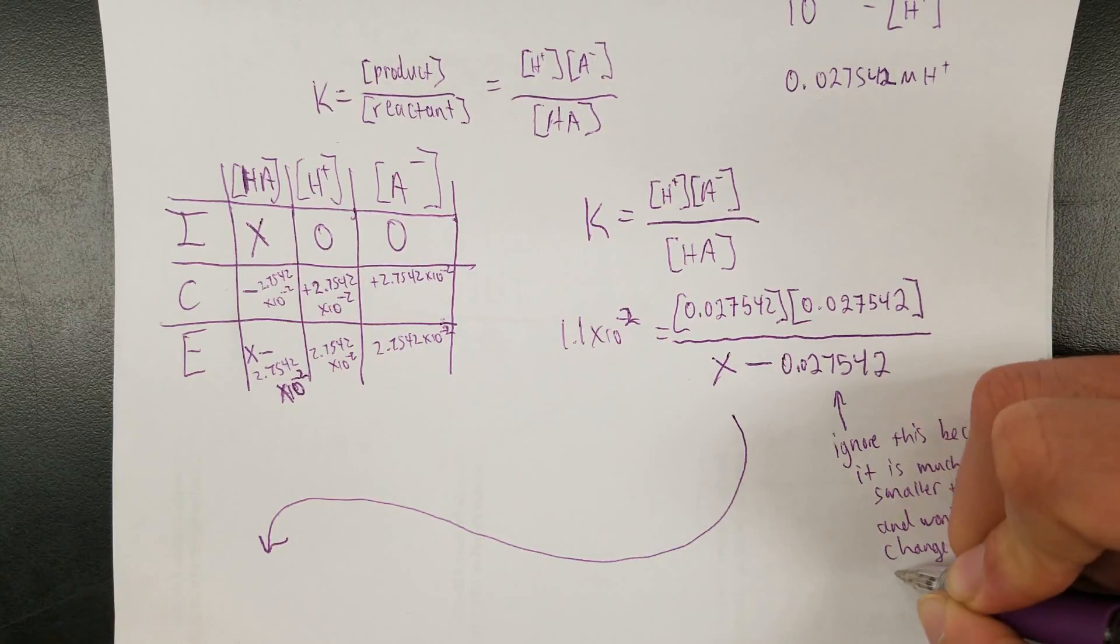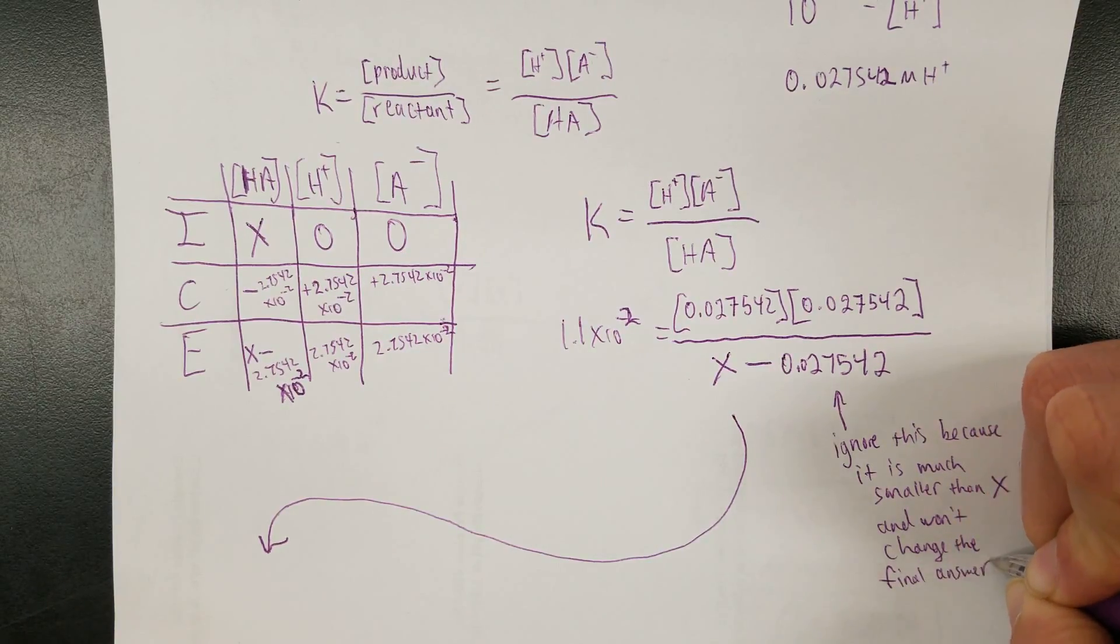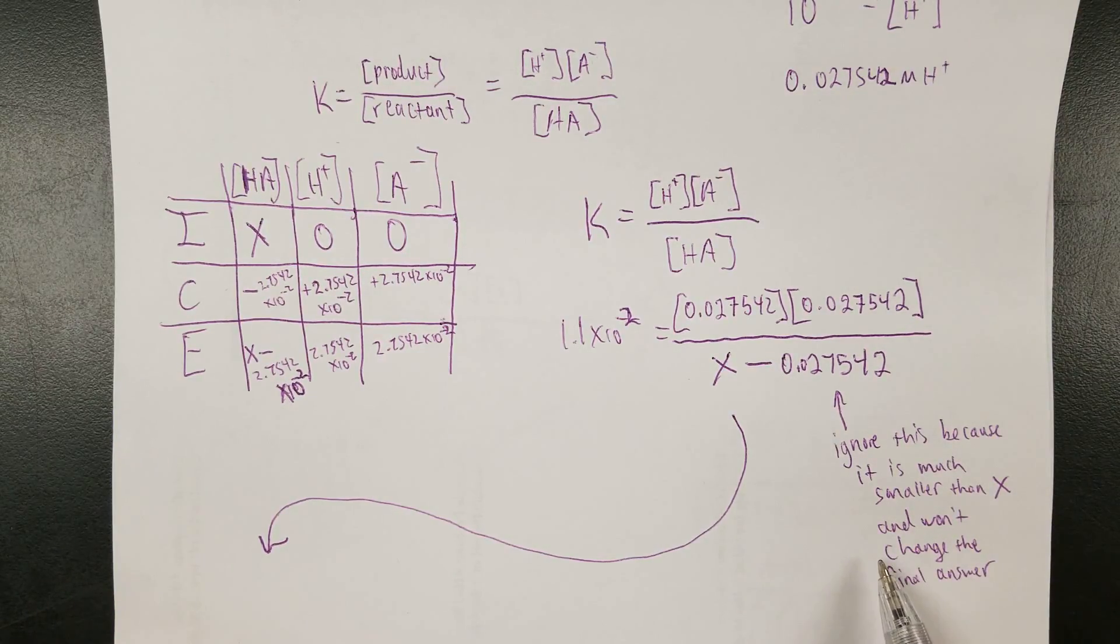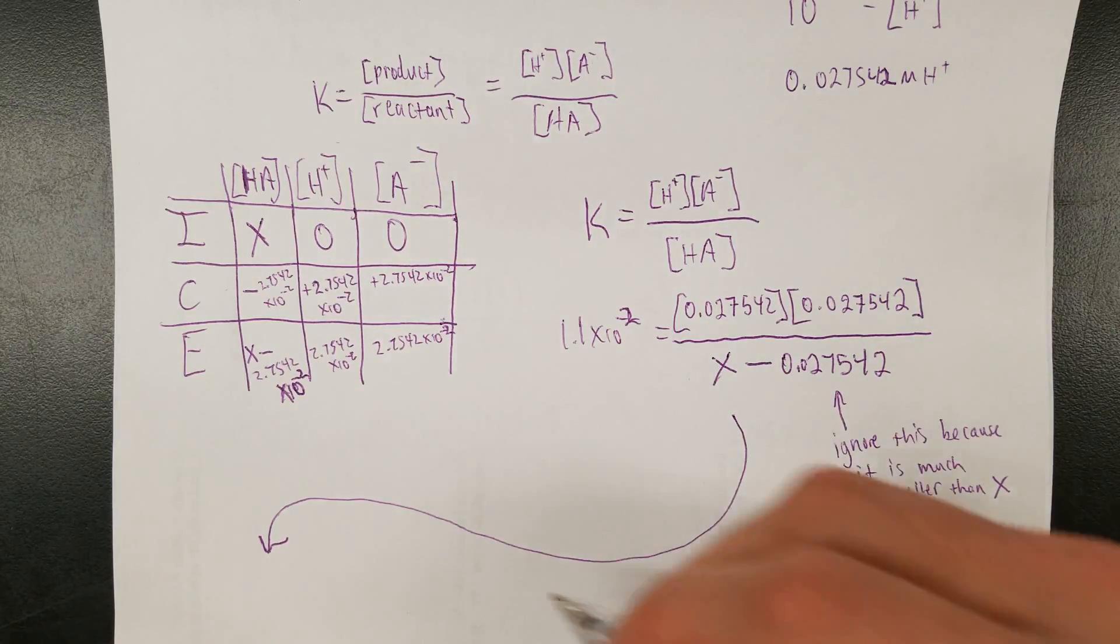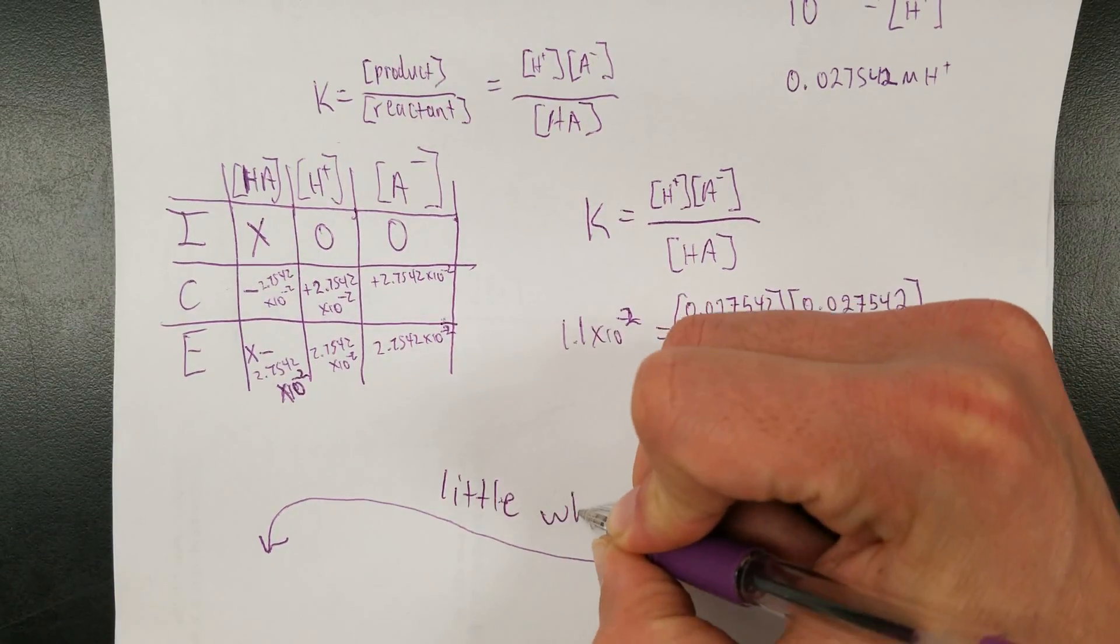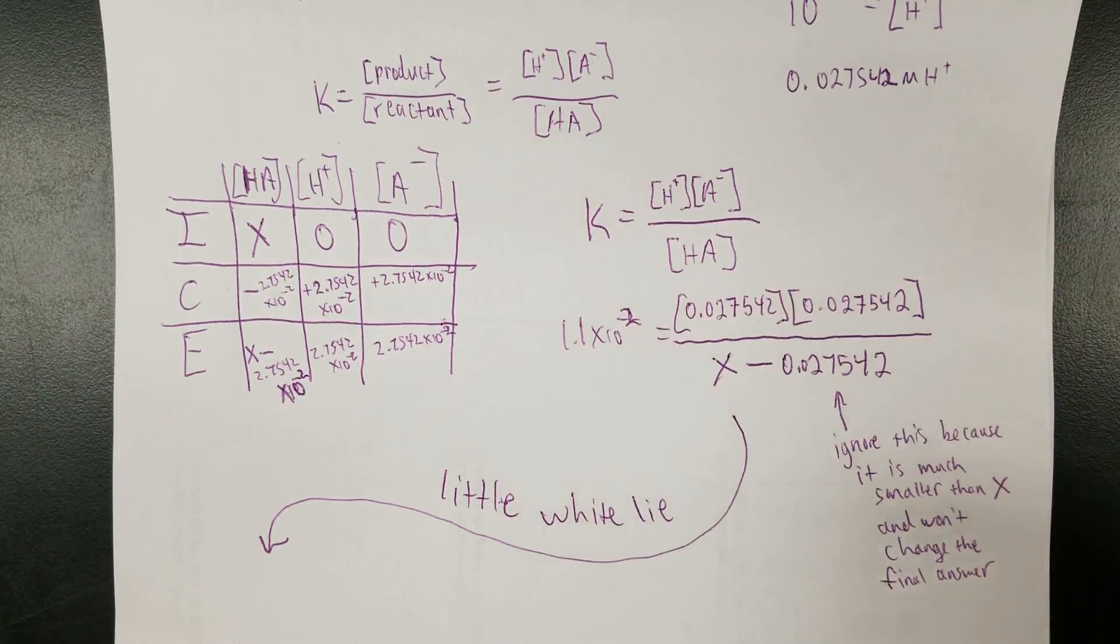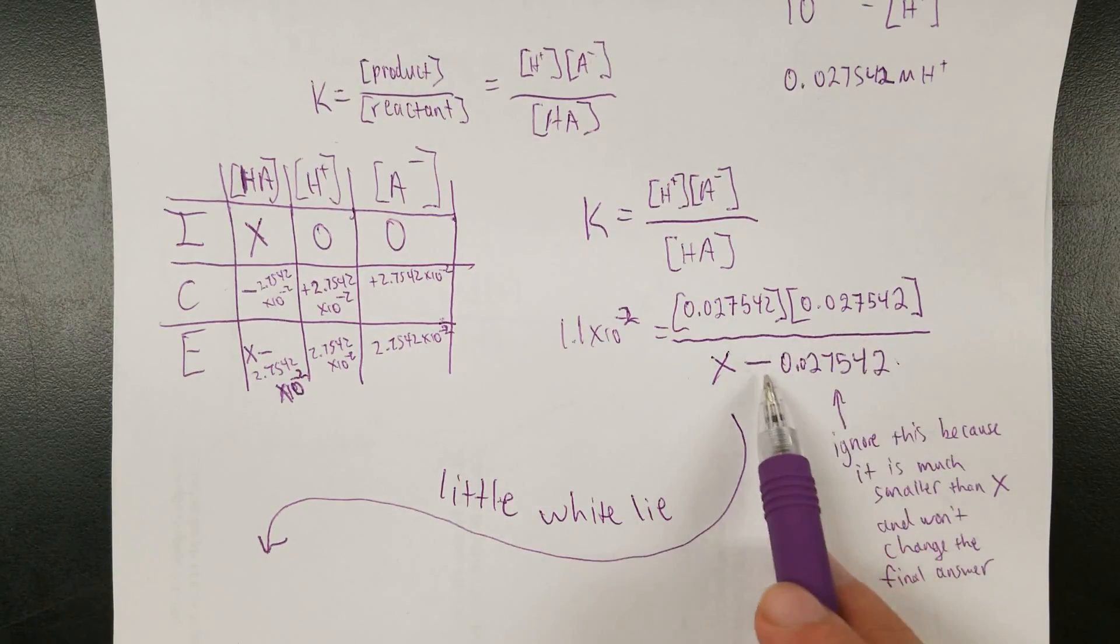So it's time for me to lie to you. I'm going to tell you a nice little white lie. And the little white lie I'm going to tell you is that this number is so small compared to this one that it's not going to change the overall volume so we can simply ignore it and have it just be X on the bottom. So we're going to say ignore this because it is much smaller than X. I mean, it will change it a bit, but it won't be all that much. And after you round off to the right sig figs, it might be not at all. So this is a lie. It does change it, but it's not that much. So close enough.